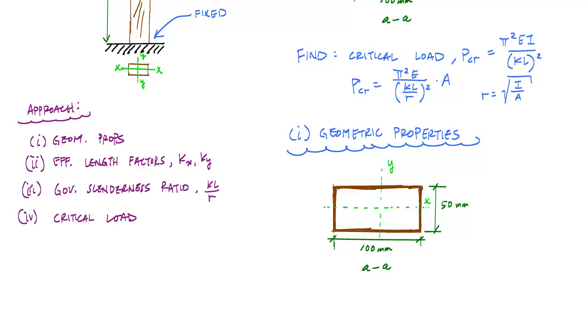All right, so the first thing I want to do is determine the geometric properties. And if I look at my Euler buckling formula, which is right here, I can see that I'm going to need the cross-sectional area. I'm also going to need the length, which I already got. I need the effective length factors, which we'll do later. But I also need this radius of gyration.